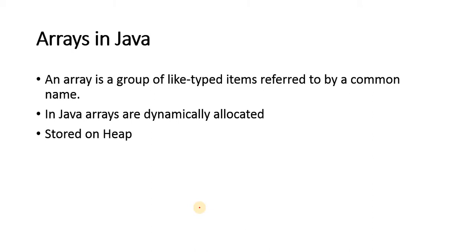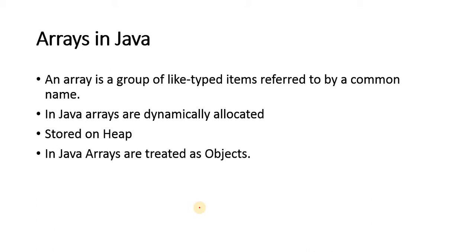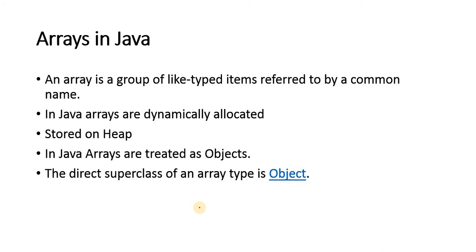One more difference is that in Java, arrays are treated as an object — not as a primitive data type, but as an object. Due to this, for arrays, we have the direct superclass as java.lang.Object.